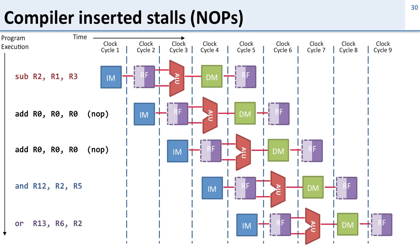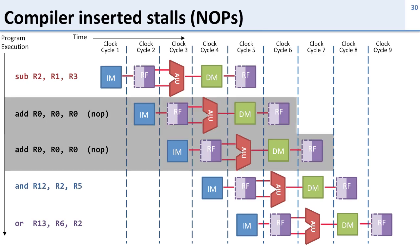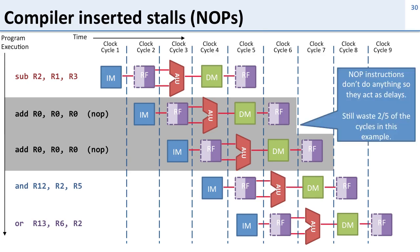Another approach to solving this problem is to have the compiler insert stalls, or no-ops. No-ops are instructions that don't do anything — no operation. We can do a no-op by doing ADD R0, R0, R0, which adds 0 plus 0 and stores it into R0. Since we can't write to R0, this has no effect. If the compiler inserts these two no-ops into the code, we don't have to do any hazard detection because the instructions are pushed far enough apart. However, the compiler has to understand the pipeline to insert no-ops at the right point. We're still wasting two-fifths of our cycles — now with no-ops instead of bubbles — so this still slows down our program.